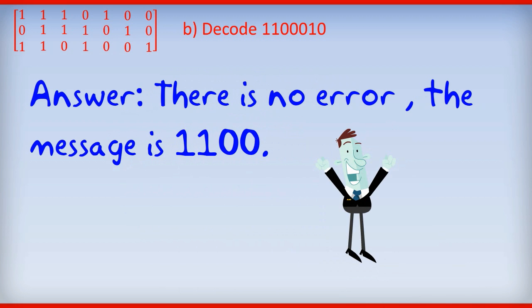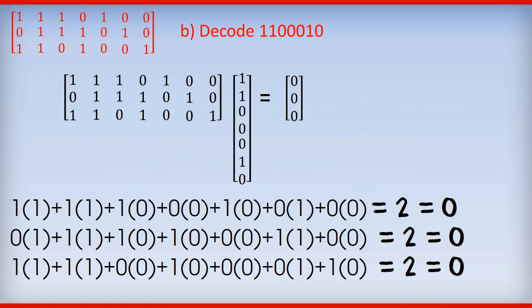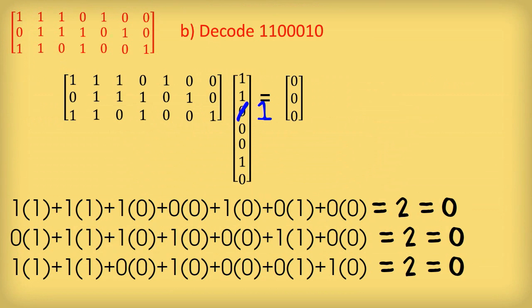Before we go to part C, I just wanted to explore a little bit what would have happened had the message not come in as we had in part B. Let's imagine that there was an error. And so what we got in was the message 1, 1, 1, 0, 0, 1, 0. So the person who sent the message had the third digit at 0, but somehow in the transmission it ended up becoming a 1.